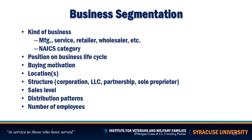You can also do business segmentation if you are a business-to-business company. If you're selling to other businesses, you can break it down by kinds of businesses: manufacturers, service providers, retailers, or wholesalers. You can also identify them by position on the business life cycle — are they a startup or a declining business? Other variables include buying motivations, location, structure (corporation, LLC, partnership, sole proprietorship), sales levels, number of employees, and distribution patterns.